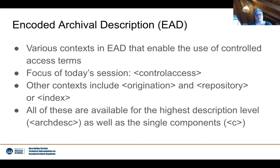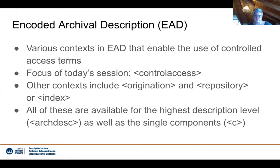When we look at Encoded Archival Description (EAD), there are various contexts where encoding is enabled for controlled access terms. The focus today will be the element control access and its sub-elements, but there are other contexts as well — for example, origination when talking about the records creator, or repository when talking about the holding institution. There is also the index element and various other places where those terms could be used. All of these are available at the highest description level — the archdesc level in the EAD file — and for individual components, down to the file level.